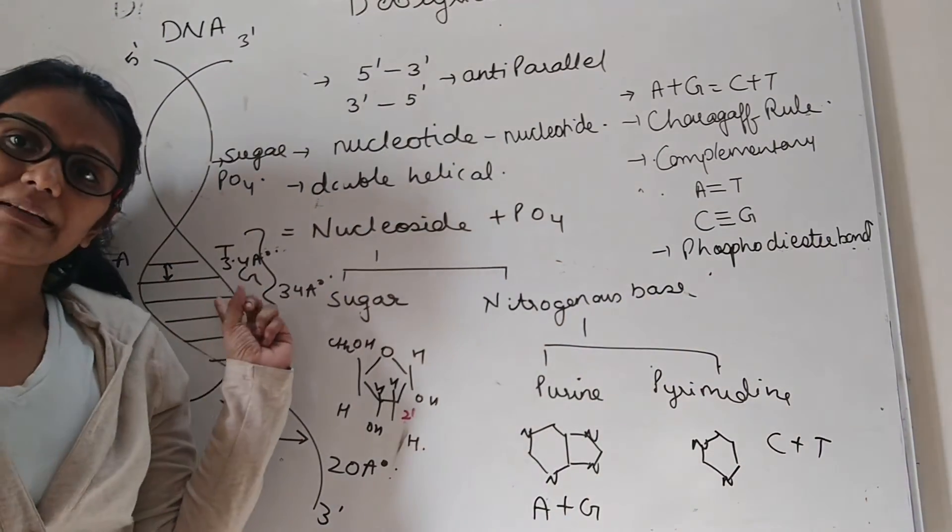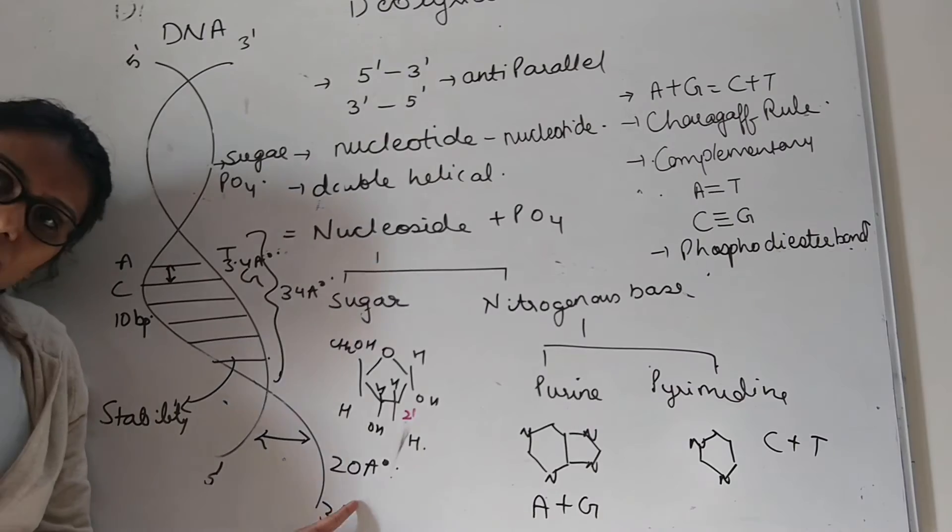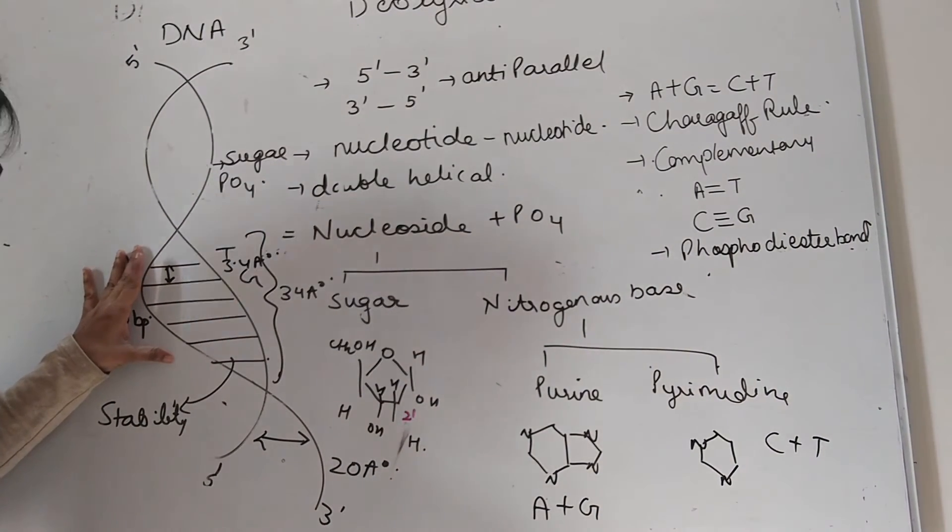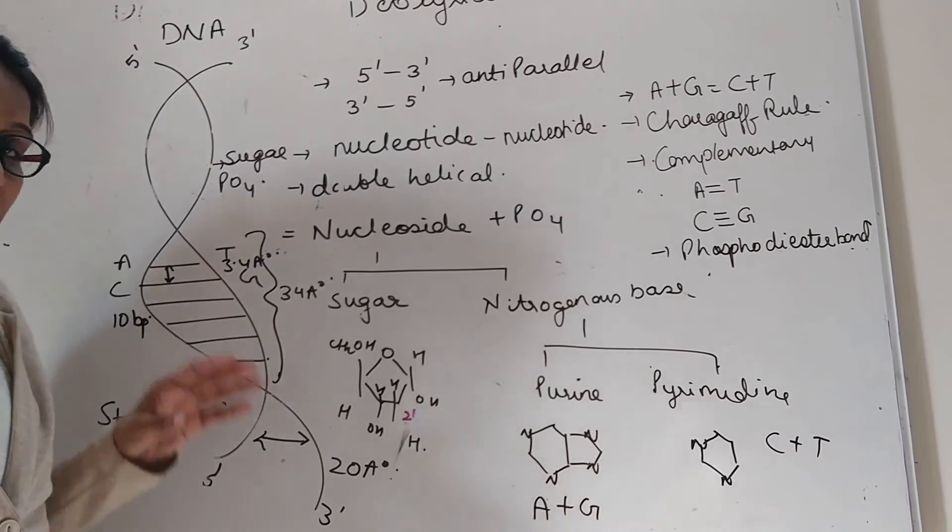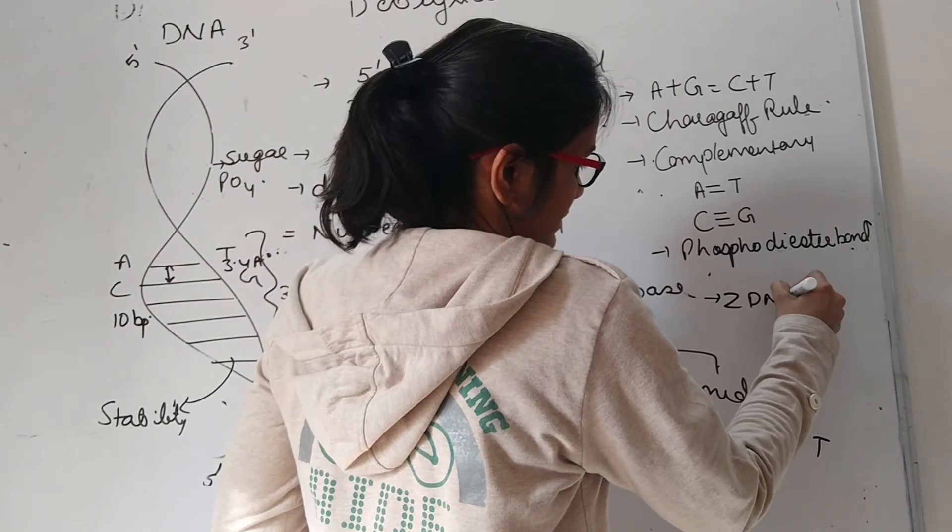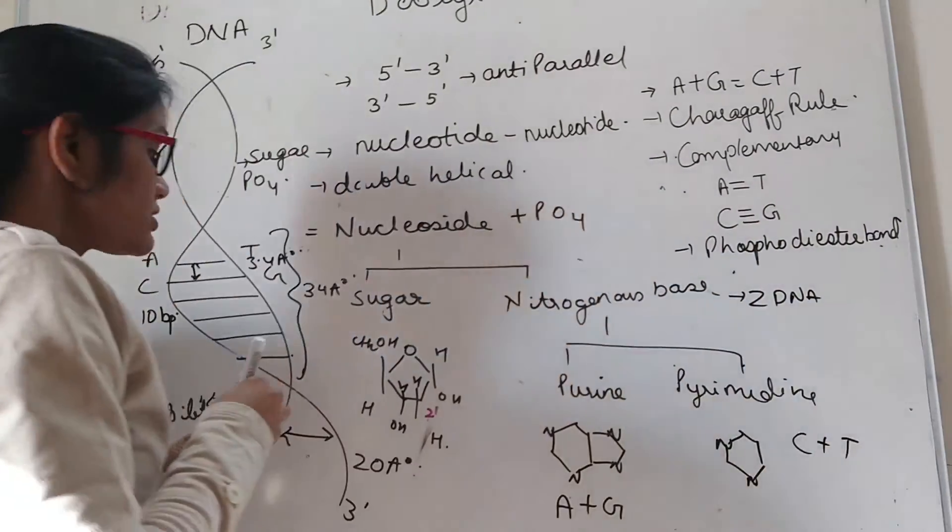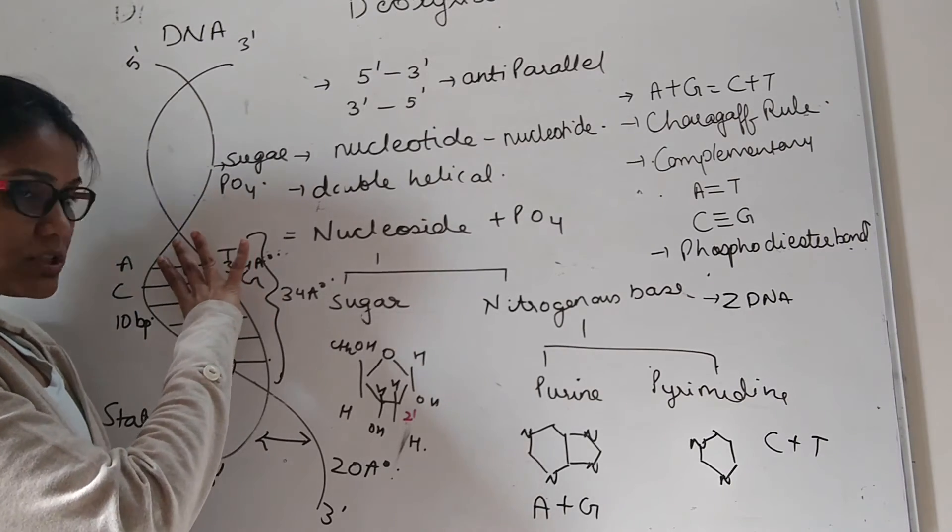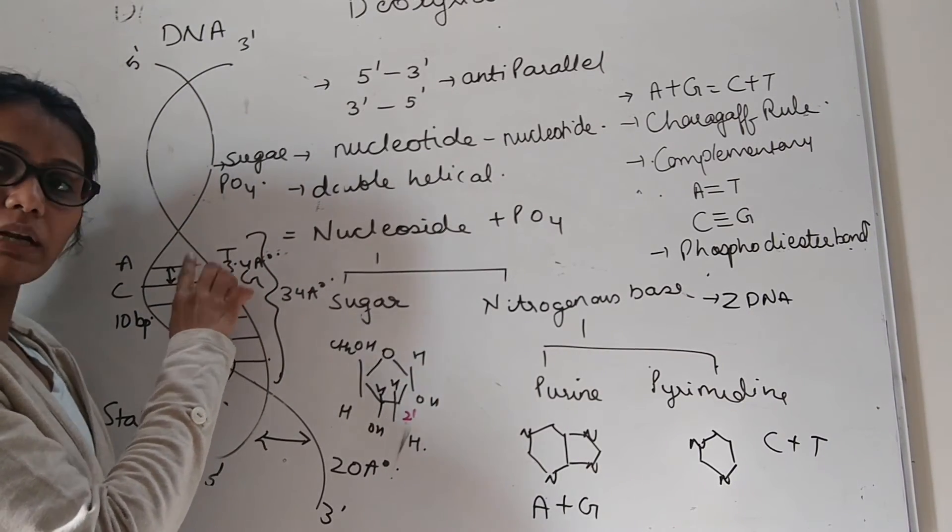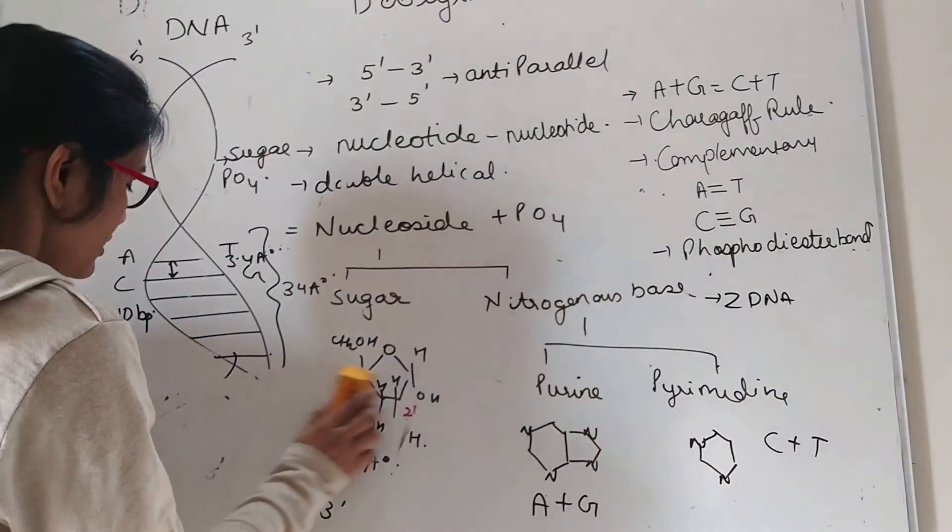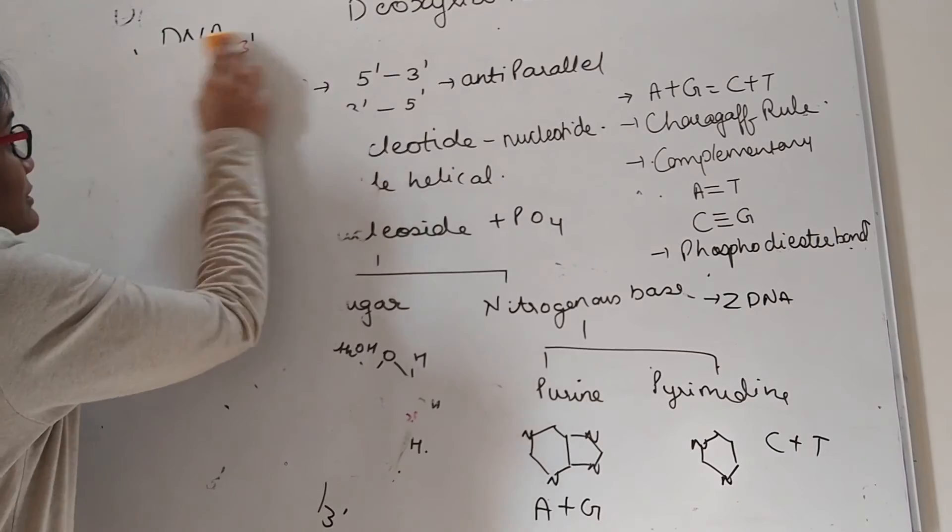The two strands are separated from each other by 20 angstroms. This is the diameter. There are turns right-handedly coiled DNA. Only DNA which is left-handedly coiled is Z-DNA. Each turn is of 34 angstroms. In each turn, there are 10 bases. The distance between the two nitrogenous bases is 3.4 angstroms.